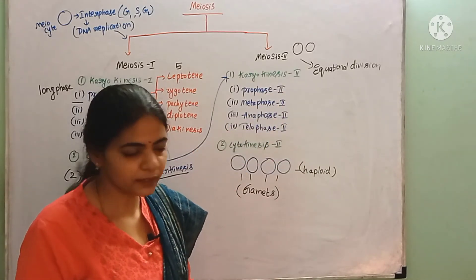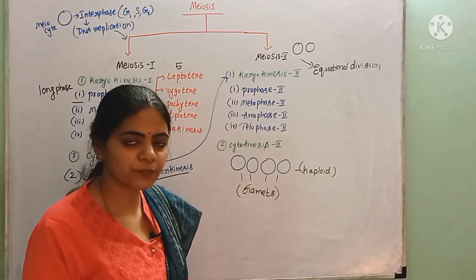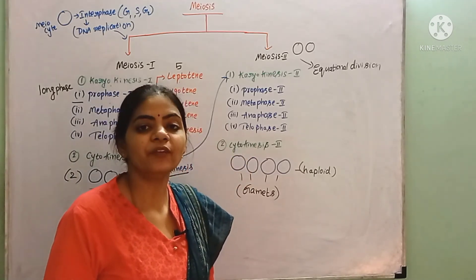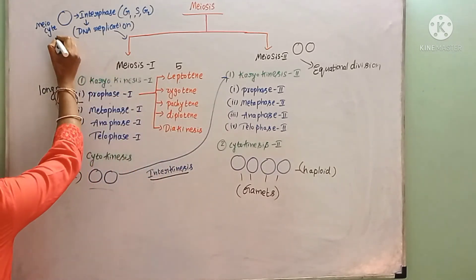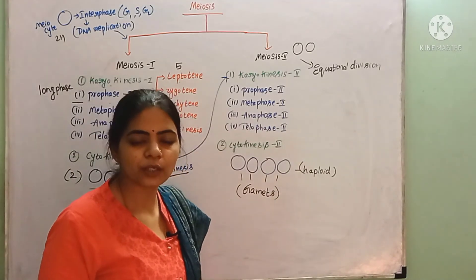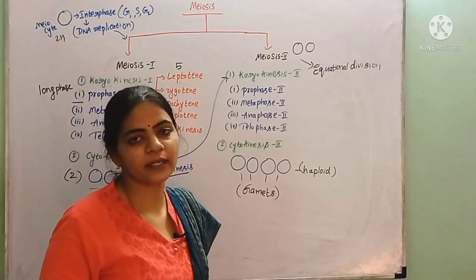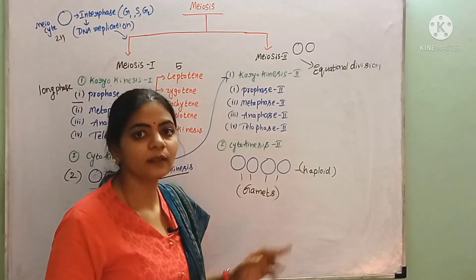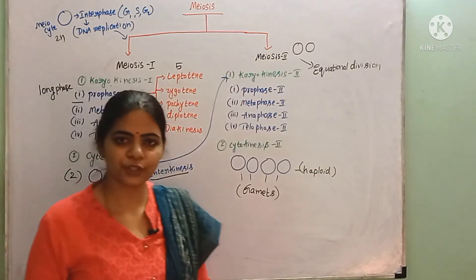After nuclear division, cytokinesis occurs. Starting from a diploid condition, the final result is four haploid cells with half the number of chromosomes. In higher organisms and higher animals, these haploid cells are called gametes. The detailed process of each phase will be covered in the next coming videos.